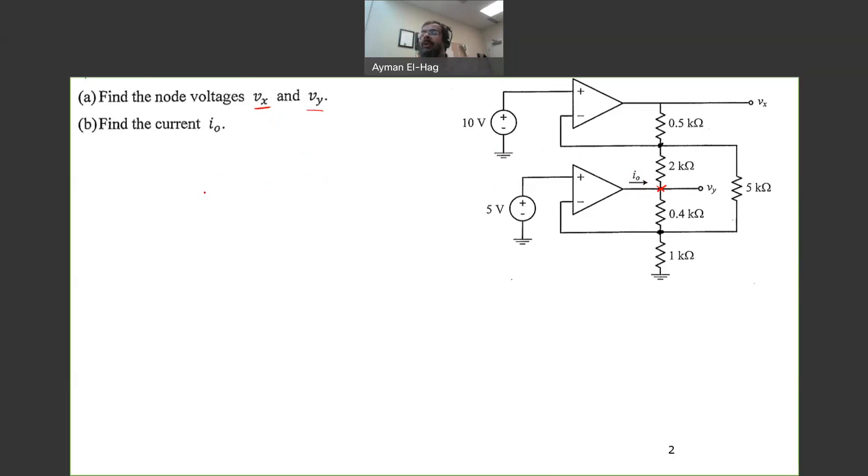So let's do the same systematic procedure we have learned. First, we need to assign either a voltage or a variable to each node. So this node is 10 volts. So basically, because of the virtual short circuit, this is also 10 volts. So this is 10 volts. So here we'll have 10 volts. This is 5 volts. So this is also 5 volts. And this will be also 5 volts. So we know now this node and we know this node.